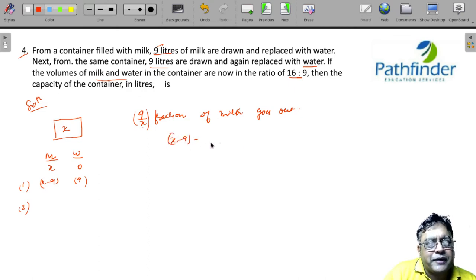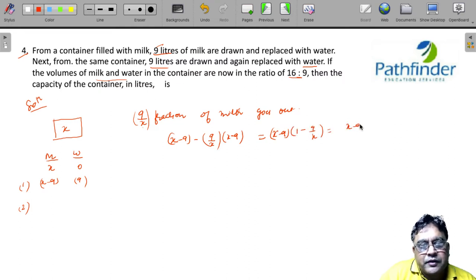Milk left after the second iteration will be x minus 9 minus the milk that goes out, which is 9 by x into x minus 9. You take x minus 9 common, so x minus 9 into 1 minus 9 by x, which is x minus 9 squared upon x. So this is the milk left at the end of the second operation.